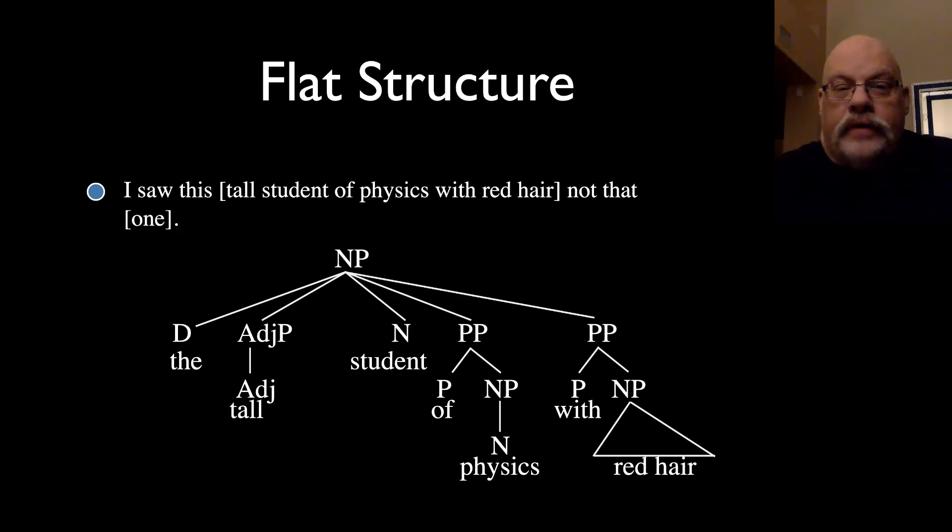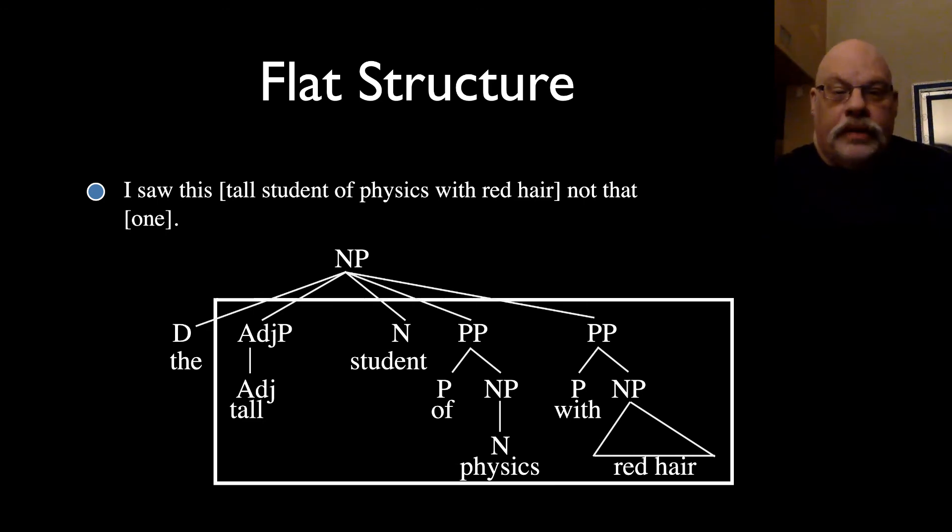It gets crazier. I saw this tall student of physics with red hair, not that one. Here, one is replacing all of that structure and excluding the determiner. This is a real problem for us. If our tree structure is right, what are all these constituents that are not being represented?